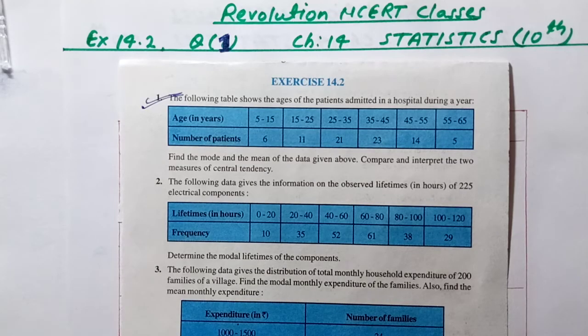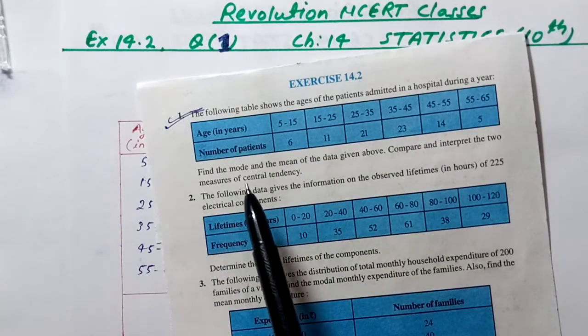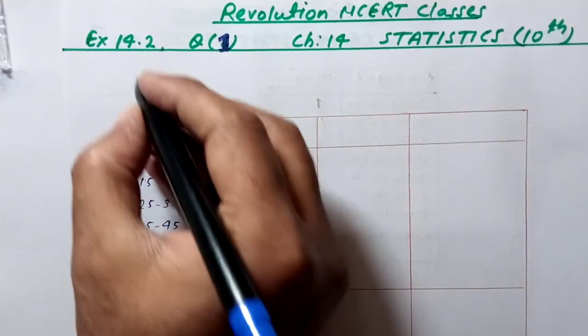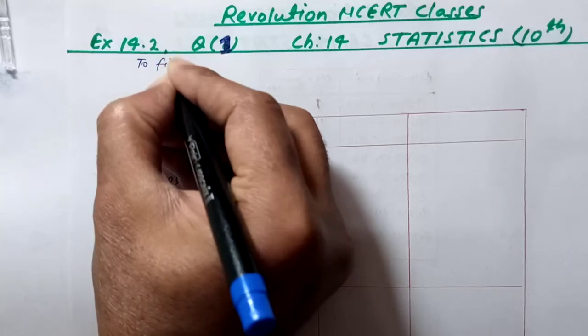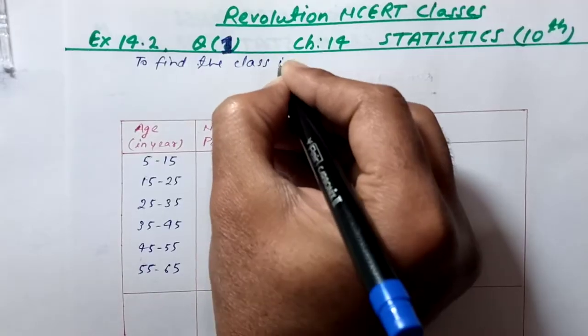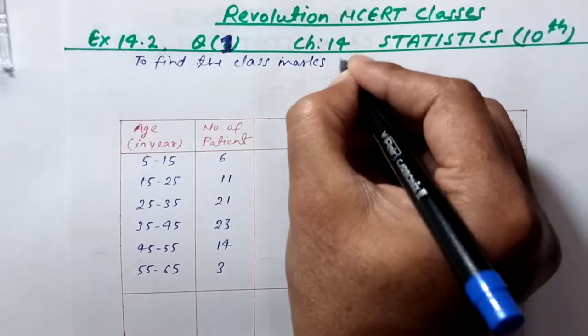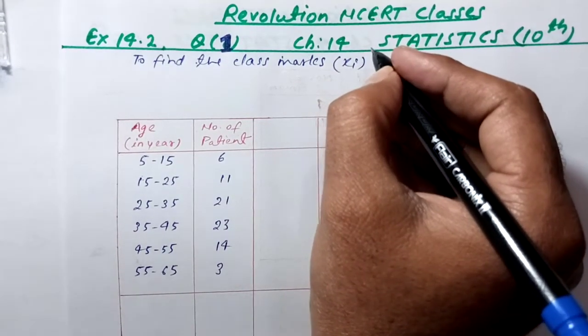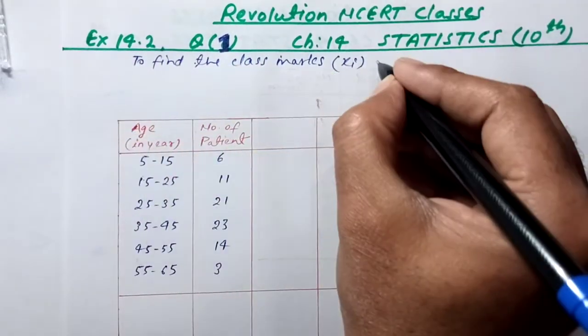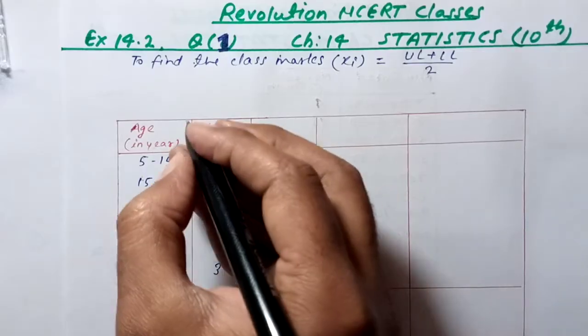I've made the table. First we'll find the mode, then the mean. To find the class marks, we need to use the relation. The relation is x_i equals upper limit plus lower limit divided by two. Now we'll calculate the class marks.